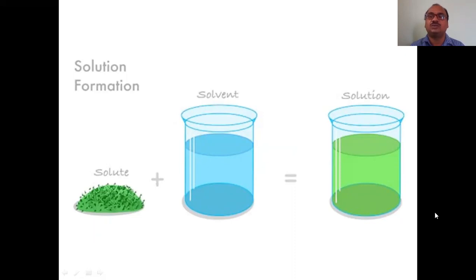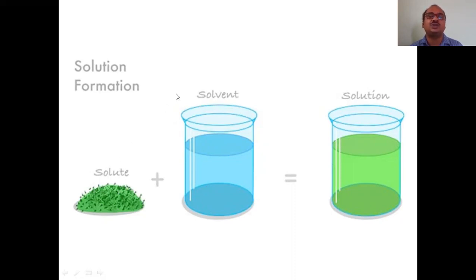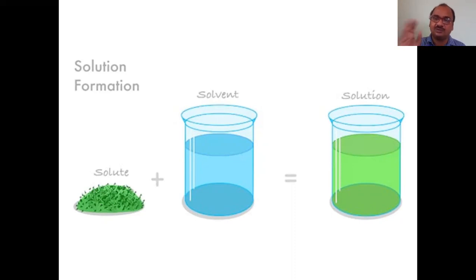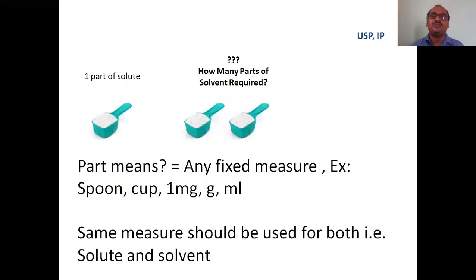We know the basic concepts of solubility and the solution. The solution consists of both solute — generally a solid — and solvent, which is the liquid. If you dissolve a solute into a solvent, you get a solution. In the solution we cannot see the solute solid particles as such; it is in the dissolved form. There is a change of phase — the solid phase is converted completely into the liquid phase.